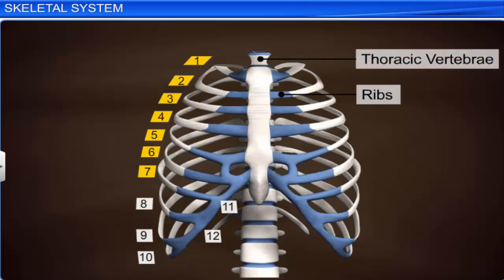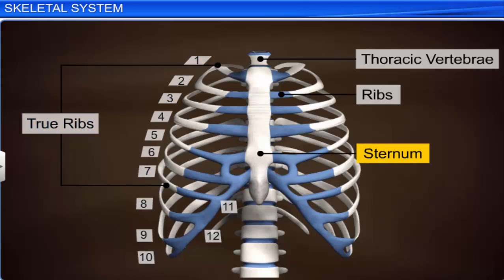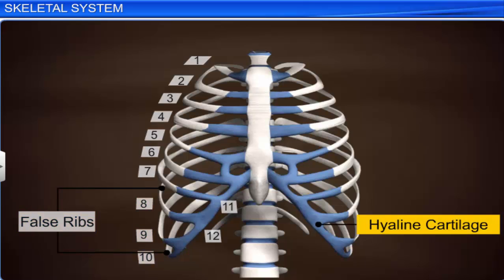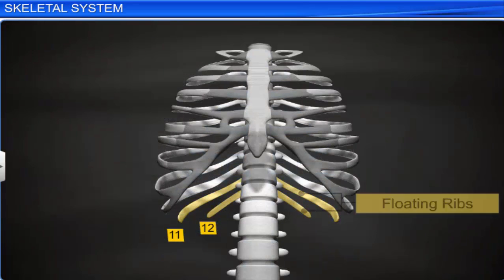The first seven pairs of ribs are called true ribs, as they are attached dorsally to the thoracic vertebrae and ventrally to the sternum by means of hyaline cartilage. The eighth, ninth, and tenth pairs of ribs are called false ribs, or vertebrochondral ribs. These ribs are not attached directly to the sternum, but they join the seventh rib with the help of hyaline cartilage. The last two pairs are called floating ribs, as they are not attached to the sternum.